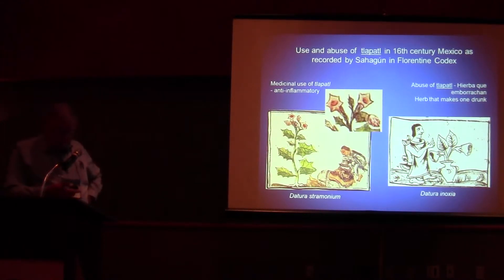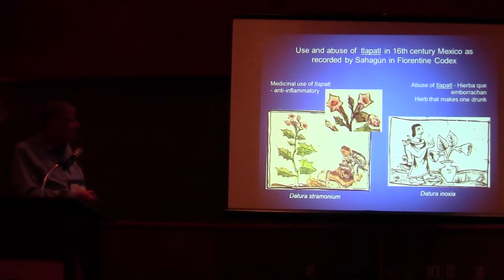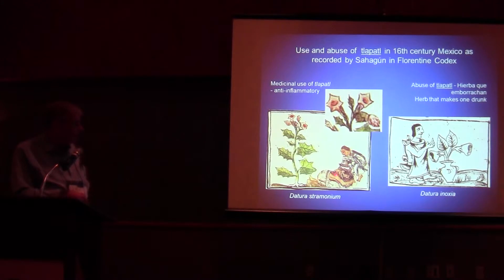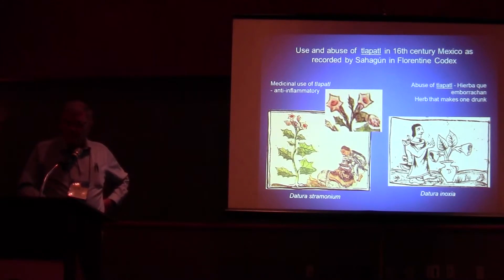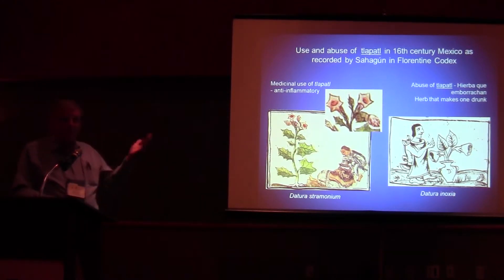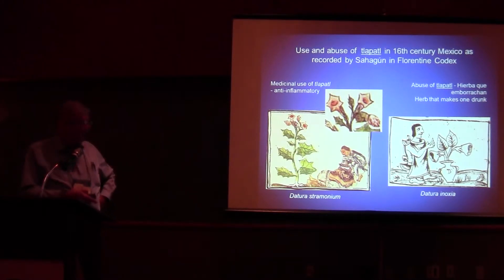In the historical literature we have quite a bit of documentation. In particular, the Sahagún — essentially our field guide to plants at the time of the conquest — provides strong documentation of Datura as an anti-inflammatory medicine, in particular Datura stramonium. Here's Datura inoxia in the section dealing with abuse of Datura — of course, from the viewpoint of the Spaniards, not the Aztecs. We can essentially see it documented as a plant that made one drunk or mad.